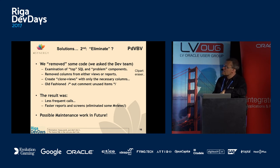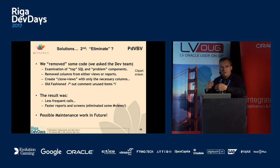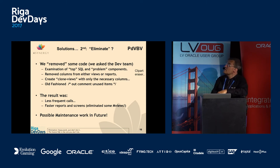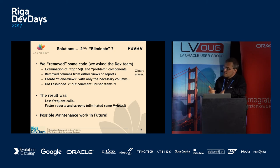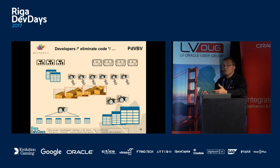We got less frequent calls, much faster reports, and eliminated some of the materialized views. But the problem is: if you mess with somebody else's code and comment out columns in views, on the next deployment someone will press the button, regenerate those views, and I'd have to go back in and comment out the columns again. By messing with somebody's code I create a maintenance nightmare.